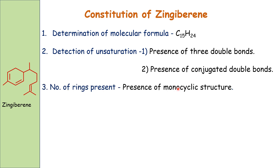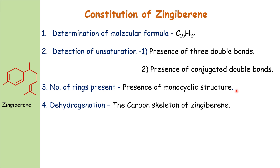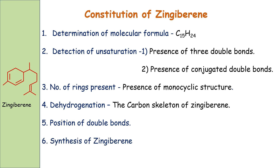Next, we determine the number of rings — gingivirine has a monocyclic structure containing one ring. Then we study dehydrogenation to determine the carbon skeleton, followed by the position of the double bonds. Finally, the structure of gingivirine is confirmed by synthesis.